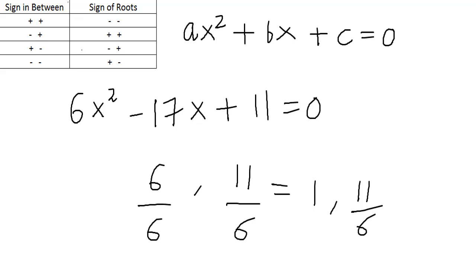So in this method, all you got to do is remember this table. A few notes: when the sign in between is plus-minus, the negative sign will be with the root having a greater modulus value. When the sign in between is minus-minus, the negative sign will be with the root having a lesser modulus value. I will come up with more interesting videos — do like my video, subscribe to my channel, and post valuable feedback so I can improve my upcoming videos. Thank you.